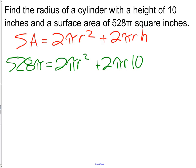So we're going to try and simplify this at least a little bit. The first thing I want to do is just combine the like terms. I have 528π equals 2πr² or 2πrh. Now, over here, we have 2 times π times r times 10. That would give me 20πr.